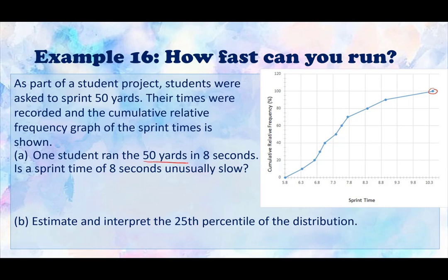So let's talk about how to find this point on the graph. 50 yards in 8 seconds, so his time is down here. We have sprint times on the x-axis. We're looking for about 8 seconds, so this is about 8 seconds right here, because each one of these goes by about 0.1. So we're going to go up to this point on the graph. Now, the question is asking, is a sprint time of 8 seconds unusually slow?